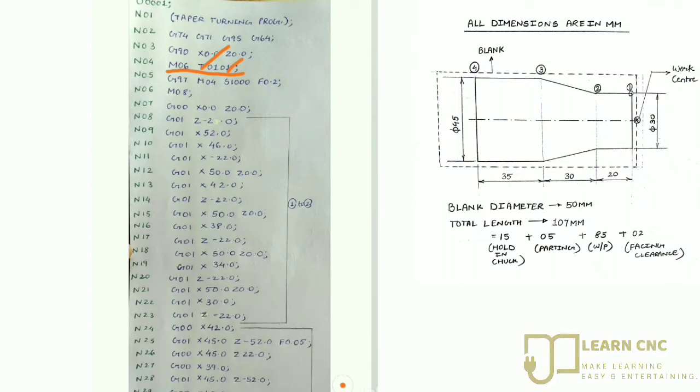Then G97 means constant speed control, and M04 S1000. Here we are starting the spindle and rotating it in counterclockwise direction with 1000 RPM.